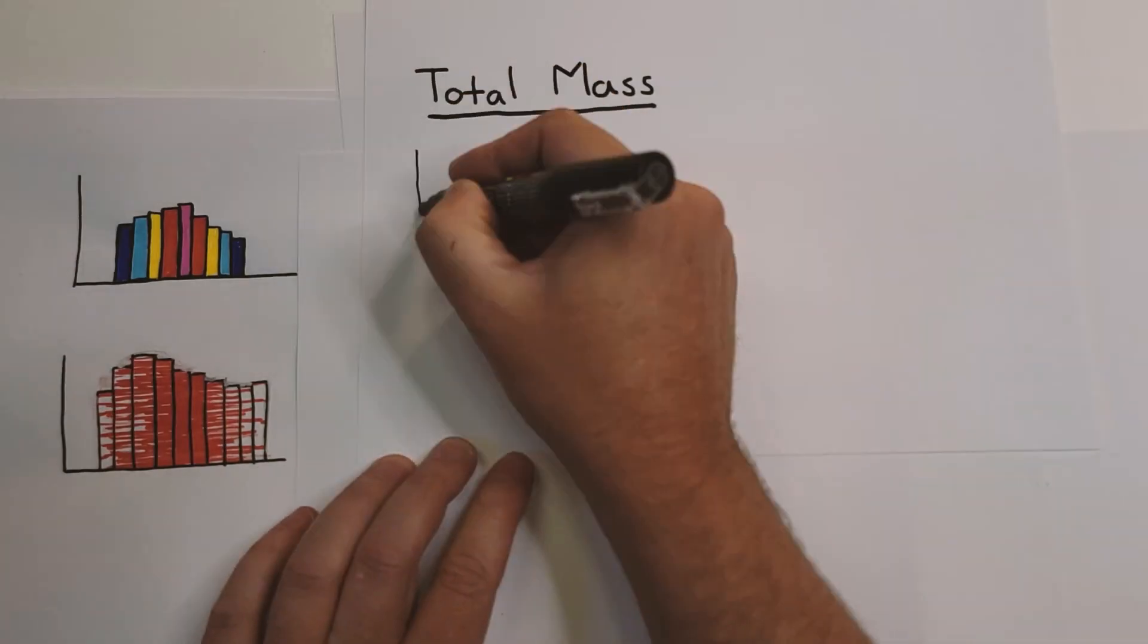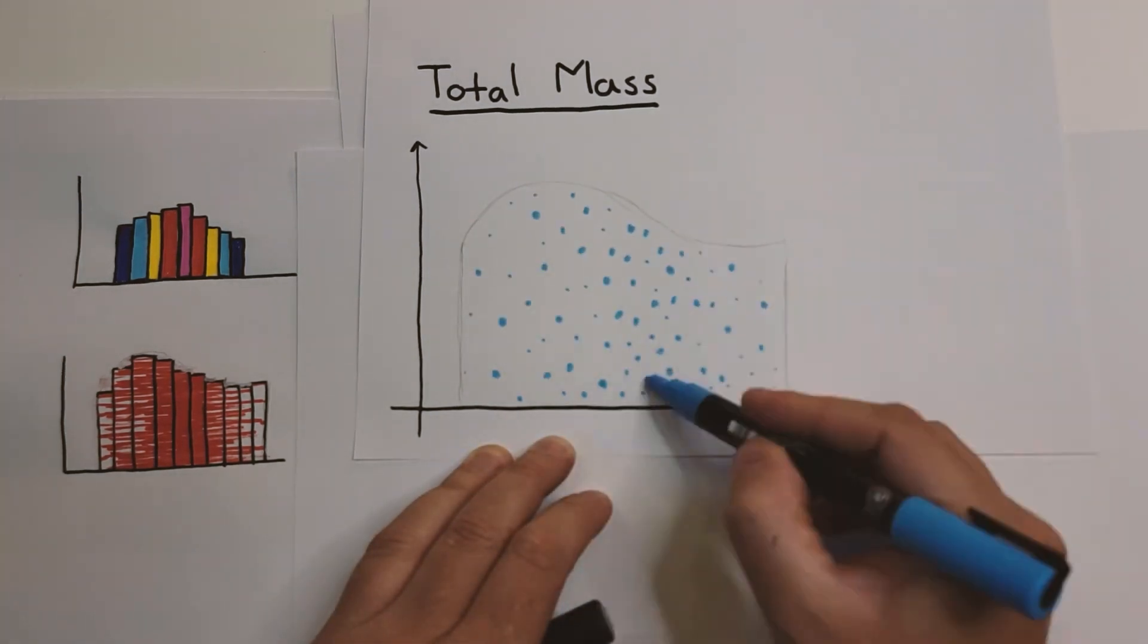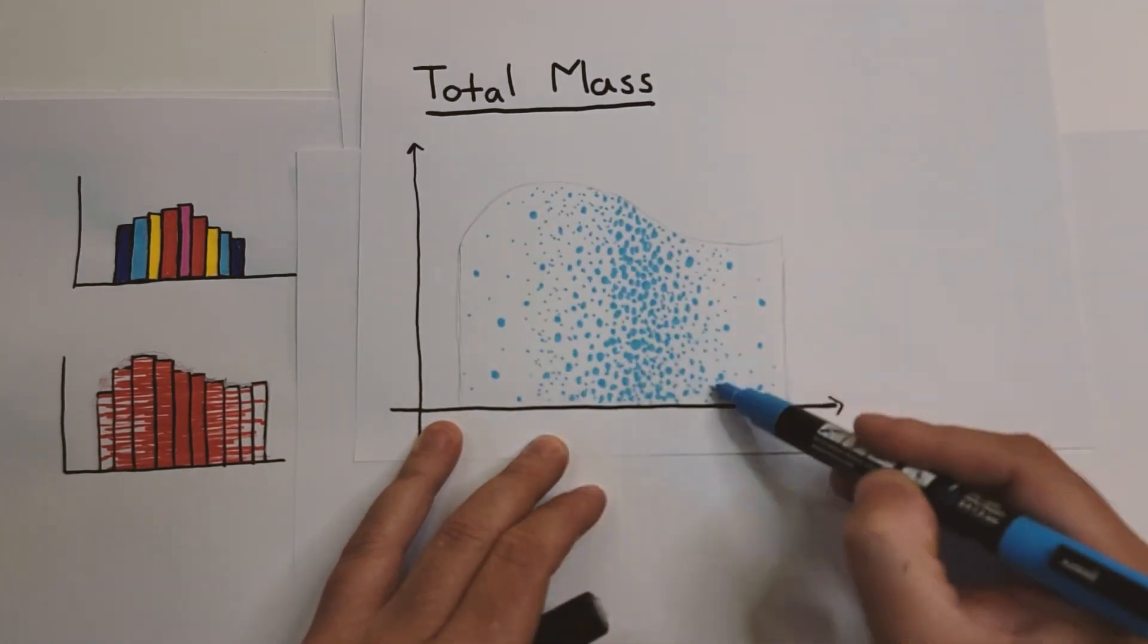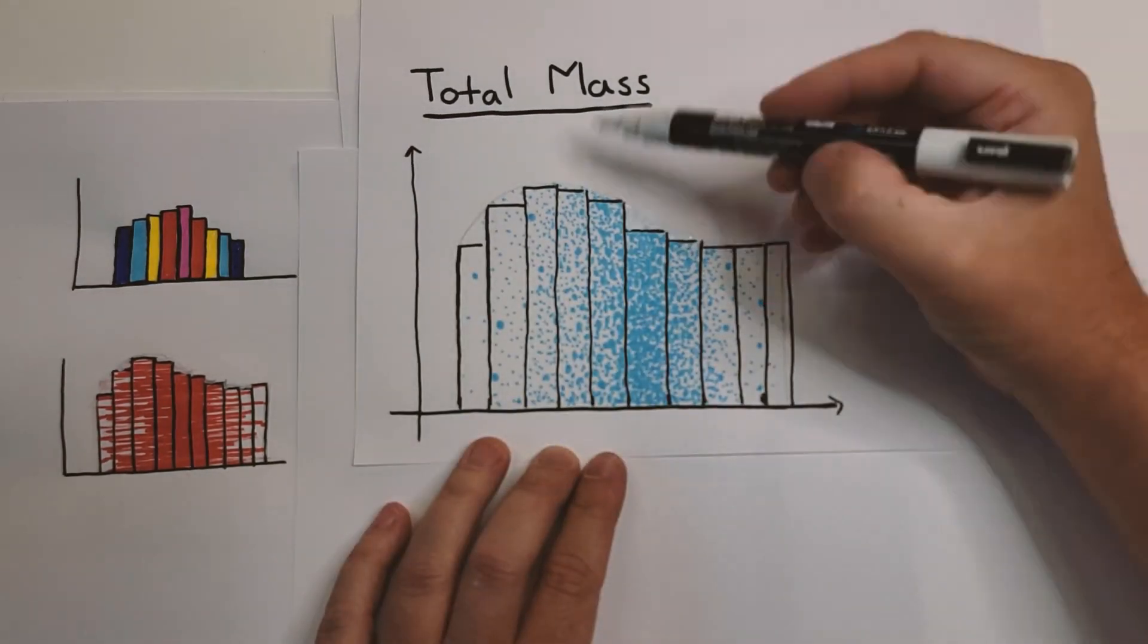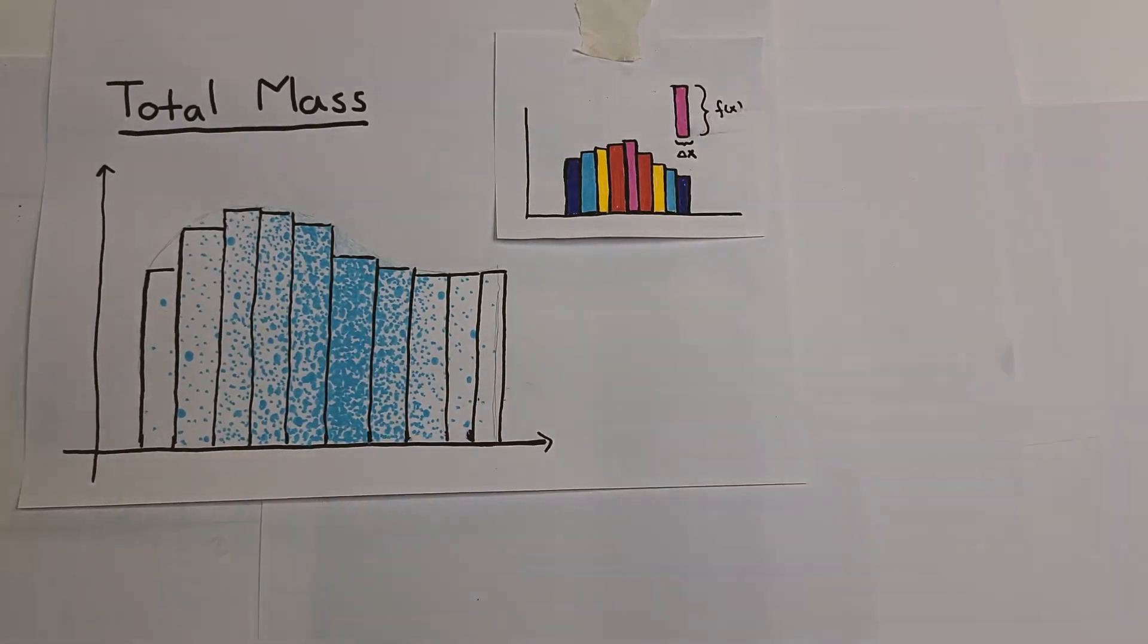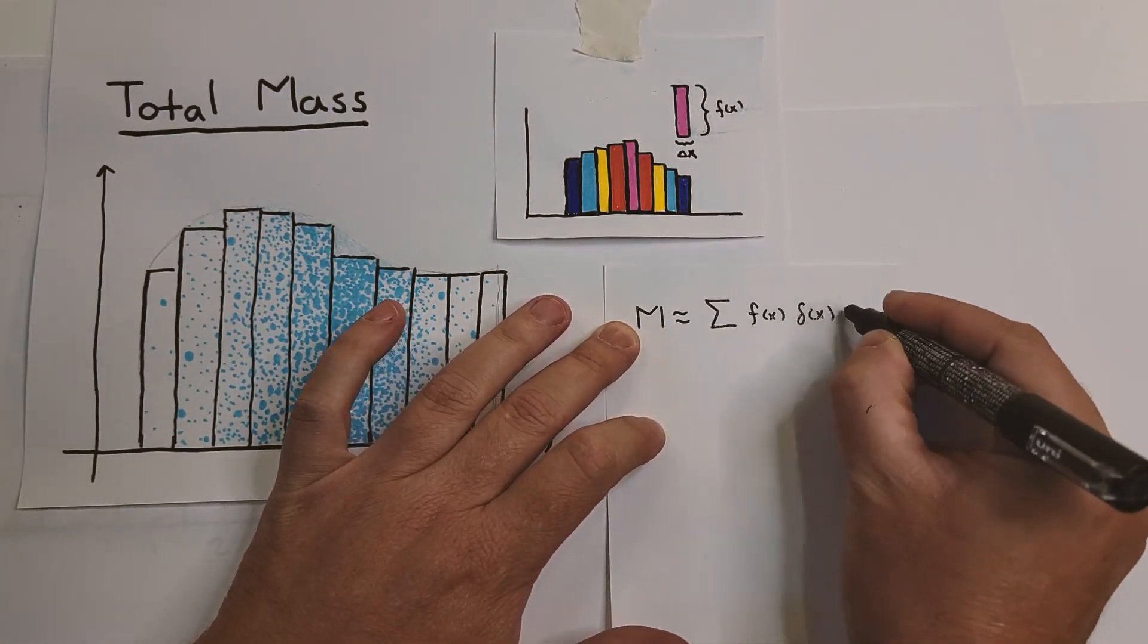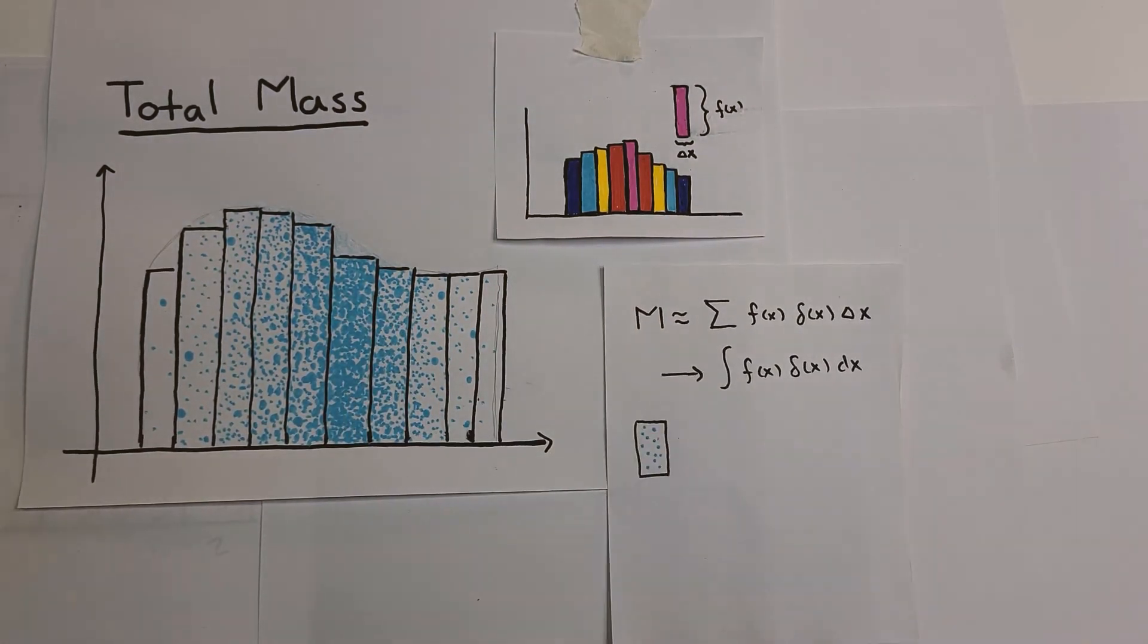Suppose you had a thin metal plate sitting on the x-axis with variable density that depended on x. You could divide the metal plate up into a bunch of vertical strips, and then add up the mass of each vertical strip in order to get the total mass of the plate.